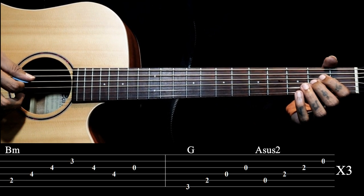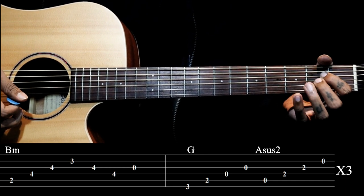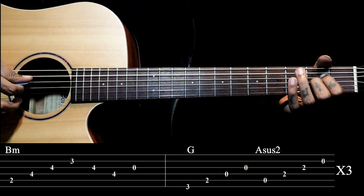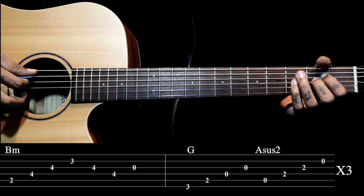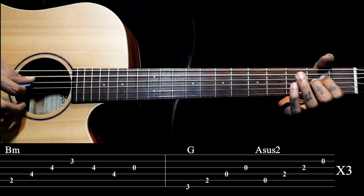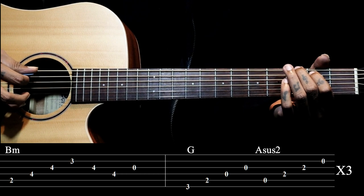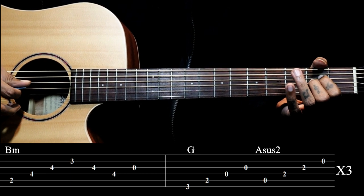Next chord we go to Asus2. Where we have an A major chord, we just lift our ring finger and we pluck, like 5, 4, 3, 2, simply. So G, Asus2.